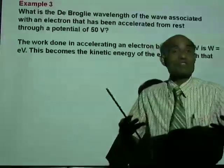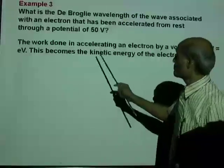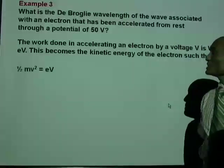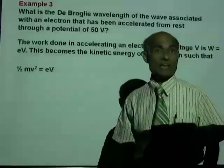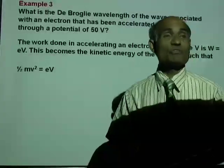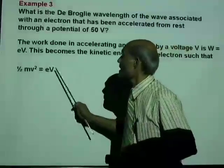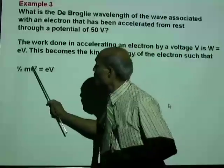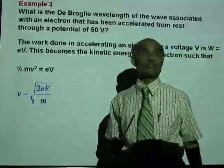Work done is a measure of the energy acquired by the electron. Now, this becomes the kinetic energy of the electron such that one half m V squared equal to E times V.